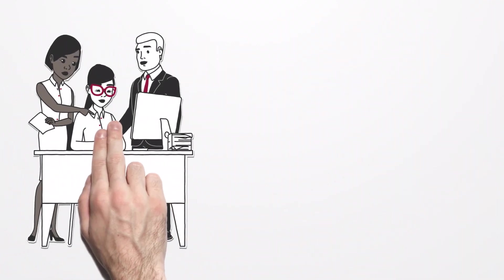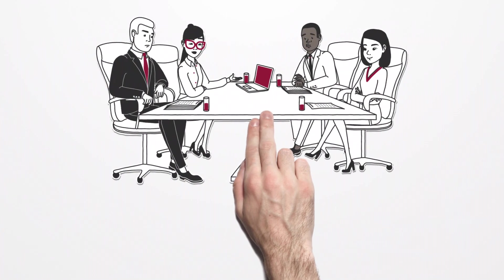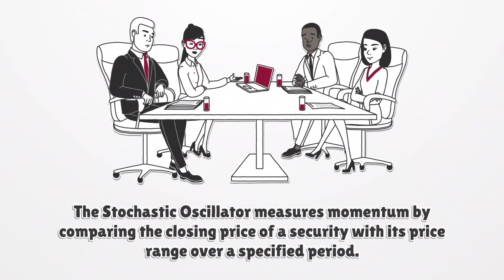Developed by George Lane in the 1950s, the stochastic oscillator is a popular technical indicator. It applies the principles of stochastics, which focus on probability and statistics, to analyze the momentum of asset prices in financial markets. The stochastic oscillator measures momentum by comparing the closing price of a security with its price range over a specified period.